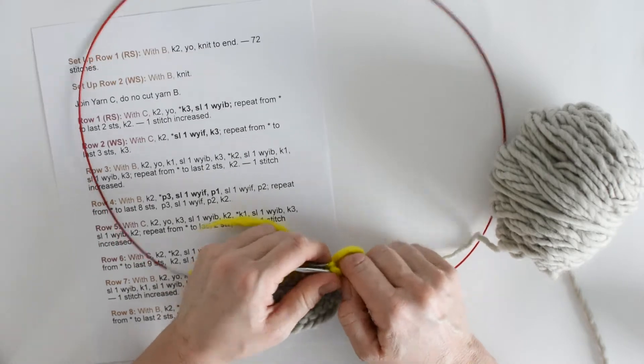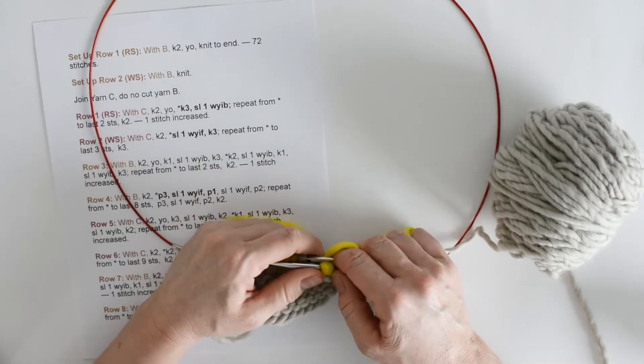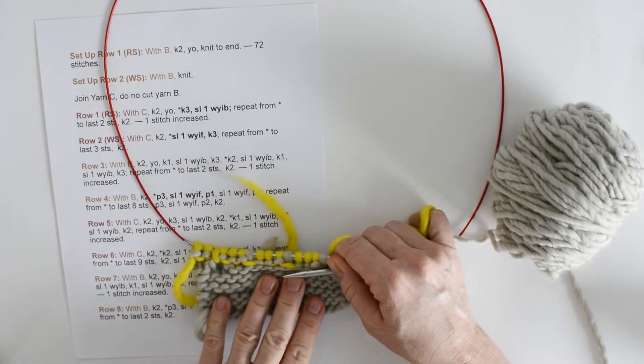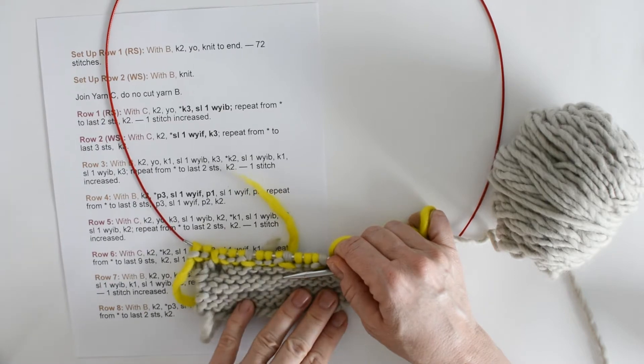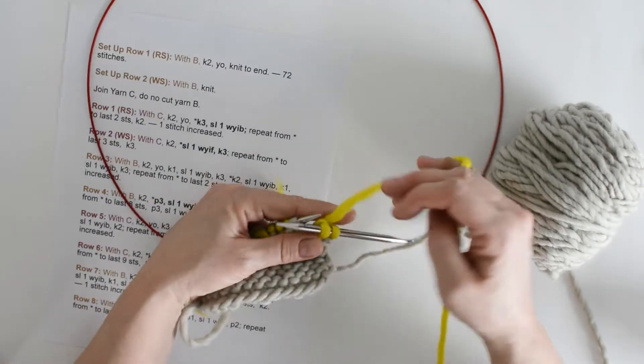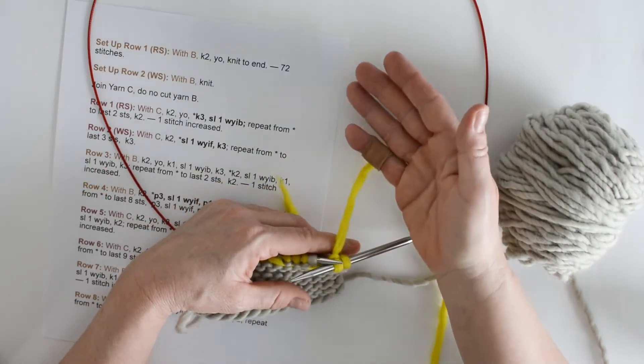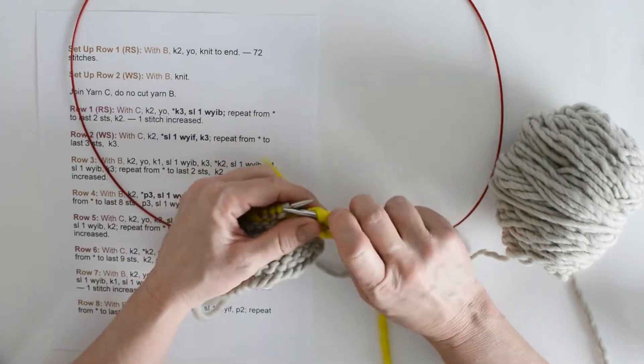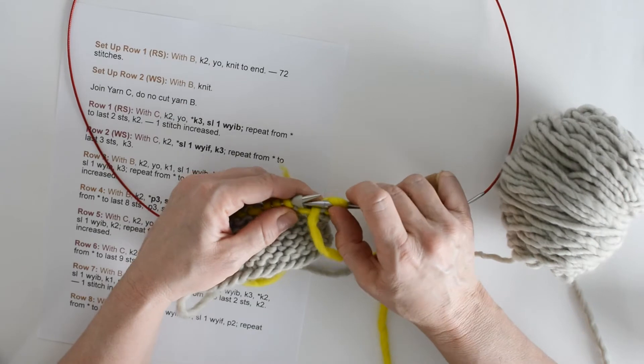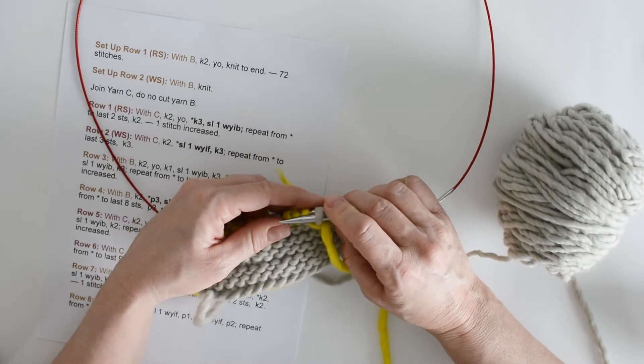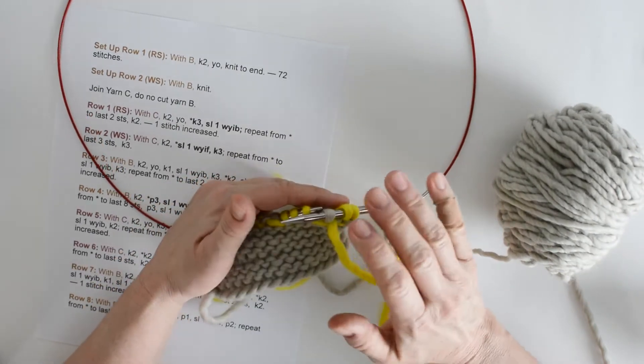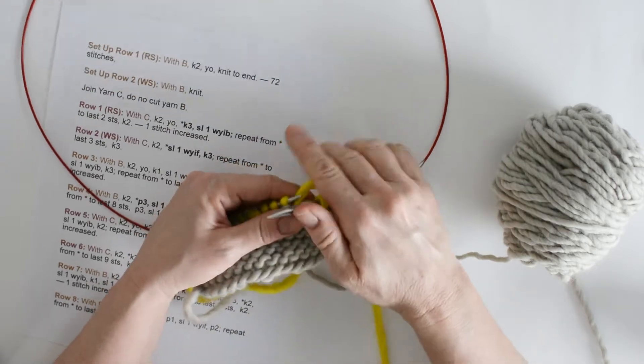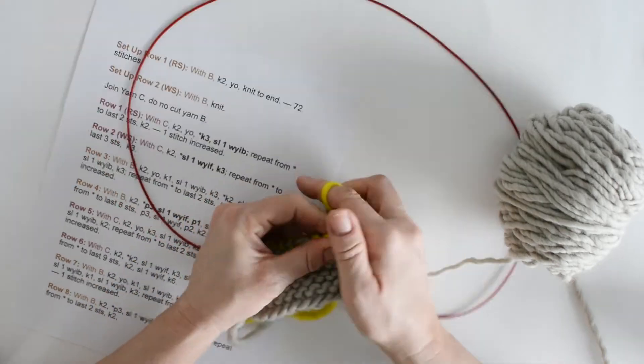Now we get to do slip 1 with yarn in front. So remember the front doesn't mean the right side of the work here, it means the side that is facing you. So although we're working on a wrong side row, right now the front is the wrong side row, because that's what's facing me here. So now my yarn is in the back of the needle because I've been knitting. And that's where we keep our yarn when we knit. I need to bring it forward to the front of the needle. See it's in front now. I slip that stitch, remember they're always slipped purlwise.